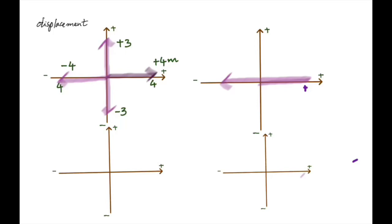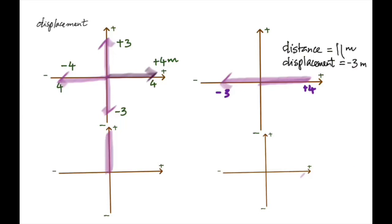How much is it? The distance is 12 meters. Now what's the displacement? I started from here and I finished here, so when I ask you to find the displacement, all you have to do is go from the starting point to the finishing point. The displacement is negative four meters.